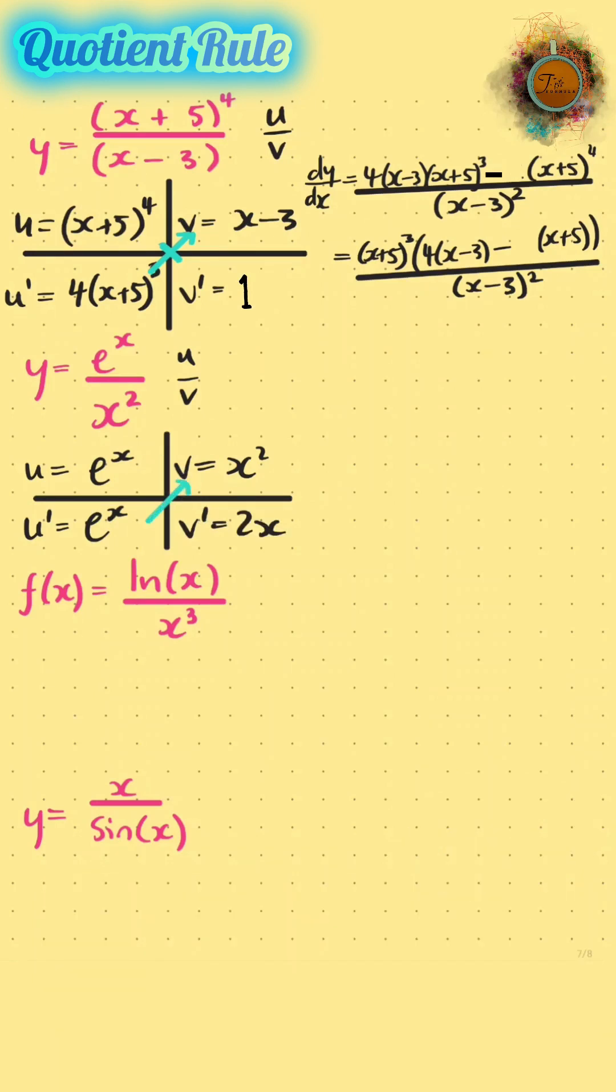We've done our derivatives, nice easy one. dy/dx is equal to x squared e to the x subtract two x e to the x, all over x squared squared, which is x to the four. Take an x out and we can take an e to the x out. On the bottom that x to the four is going to cancel and that's our final answer.